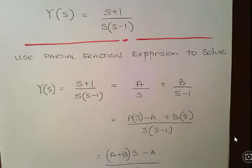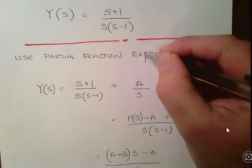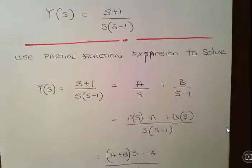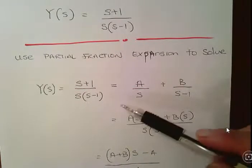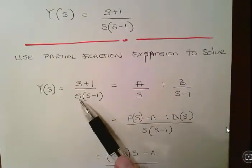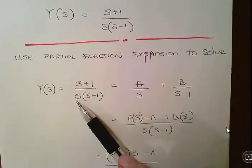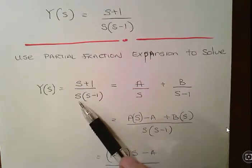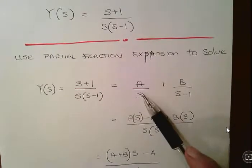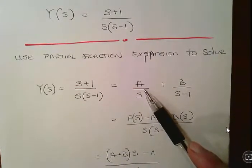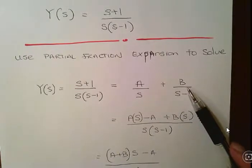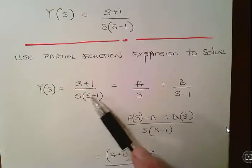Now this is a straightforward one. I'm going to use partial fraction expansion to solve this. Essentially what I'm going to do is break this up into two fractions: a over s plus b over s minus 1, which is essentially these components here.